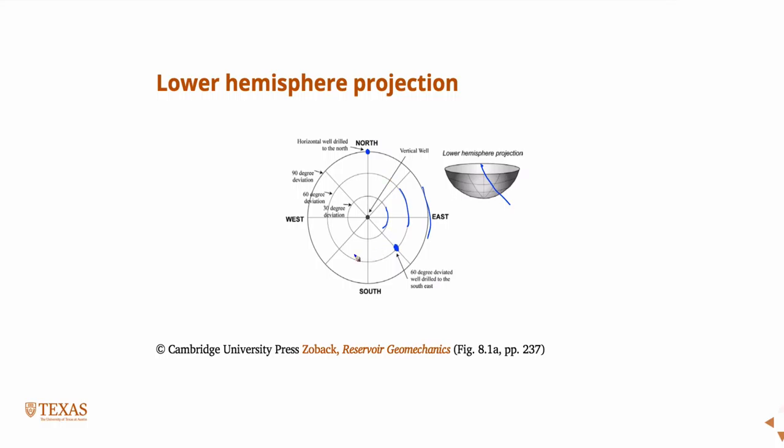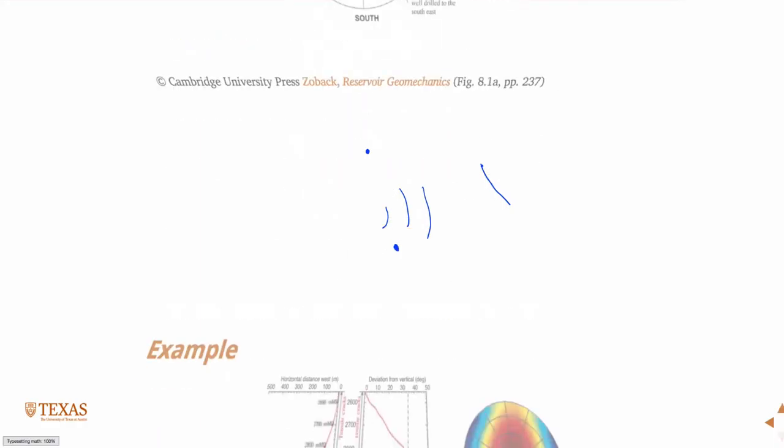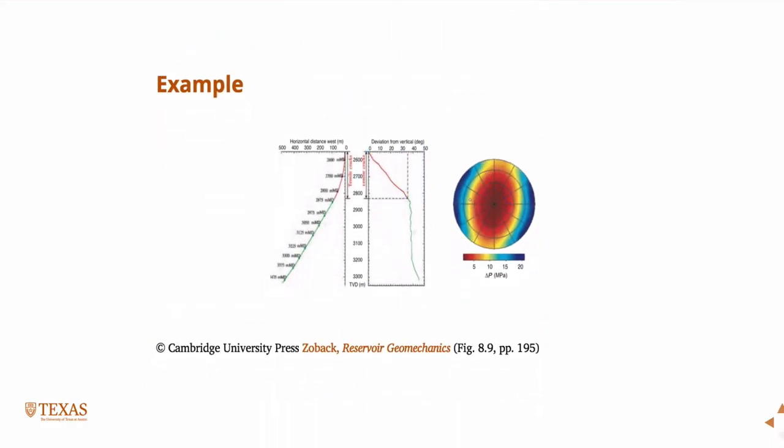And then, of course, then the radial location is just north, east, south, or west. So then using something like that, we can create plots like this, which would give us some indication. So in this case, this is an example of a deviated well, and the required delta P to maintain a stable wellbore.